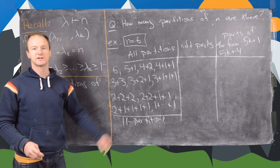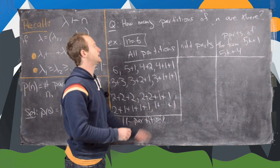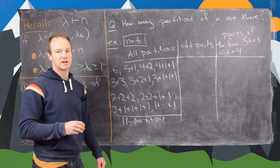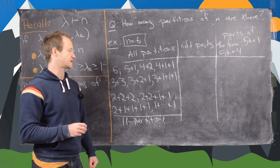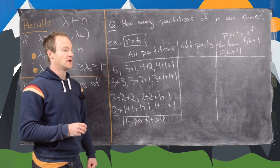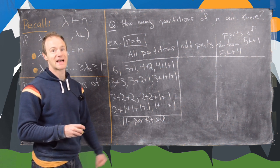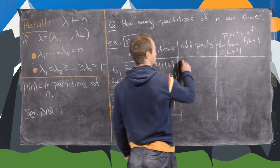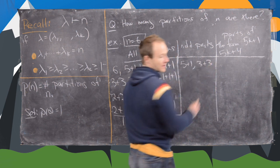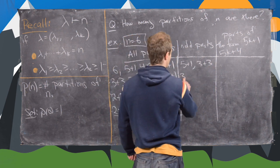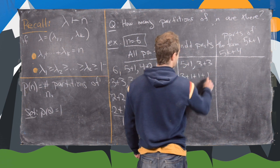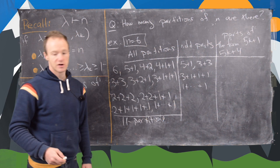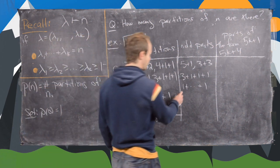Now let's look at the partitions with odd parts, since we're often interested in partitions satisfying some certain rule. The partitions of 6 with only odd parts are: 5+1; 3+3; 3+1+1+1; and all 1s. So we have a total of 4.